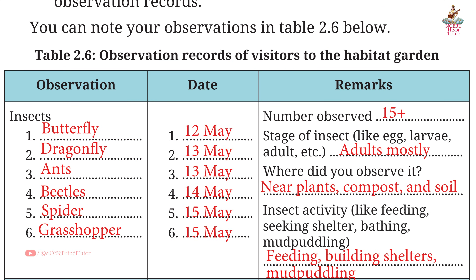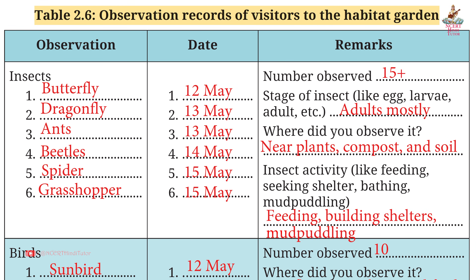Page 44, Table 2.6 — Observation records of visitors to the Habitat Garden. Insects observed: 1. Butterfly – 12 May; 2. Dragonfly – 13 May; 3. Ants – 13 May; 4. Beetles – 14 May; 5. Spiders – 15 May; 6. Grasshopper – 15 May. Number observed: 15 plus. Stage: Adults mostly. Location: Near plants, compost and soil. Activity: Feeding, building shelters, mud puddling.